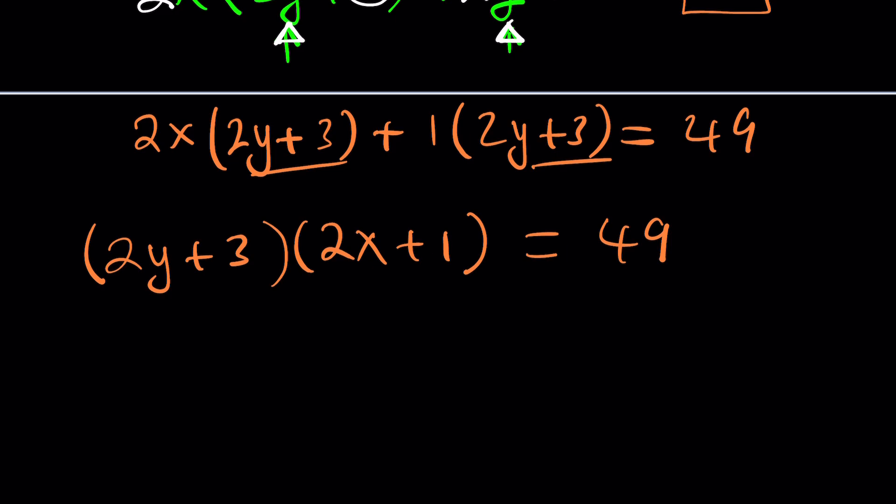Now this is really cool. You know why? First of all, if x and y are positive integers, 2y + 3 and 2x + 1 are both odd integers. Do you see it? I hope you do. Now, if you multiply two odd integers, can you get 49? Absolutely, because 49 is also odd. If one of these were even, then we would be in big trouble. But we don't have that issue.